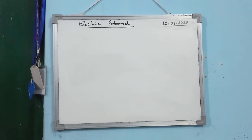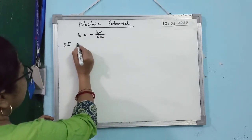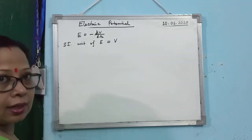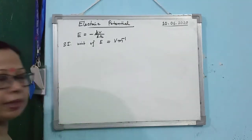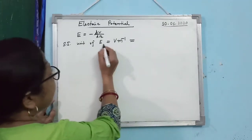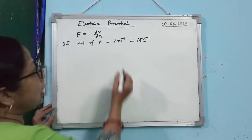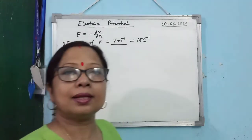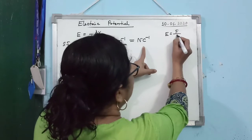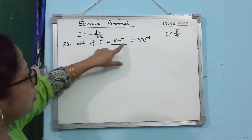From E = −dV/dR, the SI unit of electric field can be written as volt per meter (V/m). In the earlier chapter on electric field intensity, I wrote the unit as Newton per Coulomb. Both are equivalent: E = F/Q gives N/C, while E = −dV/dR gives V/m.